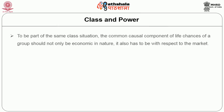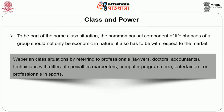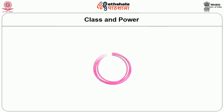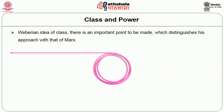To be part of the same class situation, the common causal component of life chances must also be with respect to the market. We can identify Weberian class situations by referring to professional lawyers, doctors, accountants, technicians with different specialties, carpenters, computer programmers, and entertainers in sports. While individuals in each category may have different backgrounds, each has a common relationship to a market. This distinguishes Weber's approach from Marx in terms of class consciousness: the Marxian theory assumes the link between class and class consciousness as direct and immediate.